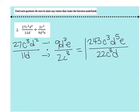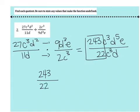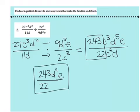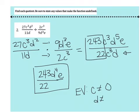Now I try to simplify: 243 over 22 — there's no number that goes into both, so it stays as 243 over 22. Now subtract the powers of things with the same variable. C to the third over c to the third — those cross off, none left. D to the fifth divided by d: 5 minus 1 gives me 4, and the bigger is on top, so d to the fourth stays on top. I still have that e on top. For EVs, looking back at the problem I have a c in the denominator and a d in the denominator, so both of those cannot be 0.